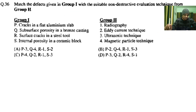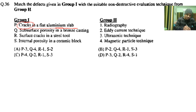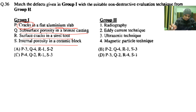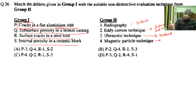The next two-mark question asks to match defects from Group 1 with non-destructive evaluation techniques from Group 2. The defects are: cracks in a flat aluminum slab, subsurface porosity in a bronze casting, surface cracks in a steel tool, and internal porosity in a ceramic block. The techniques are: radiography (detects internal defects), eddy current (detects surface and subsurface), ultrasonic (detects internal defects), and magnetic particle (detects surface and subsurface defects).